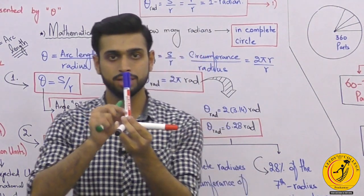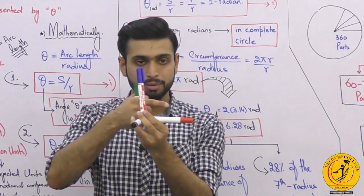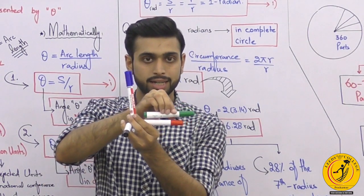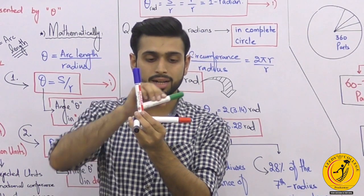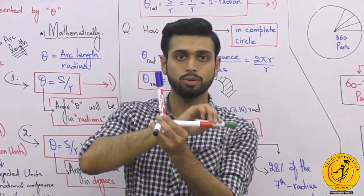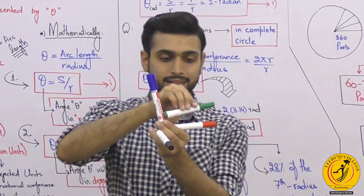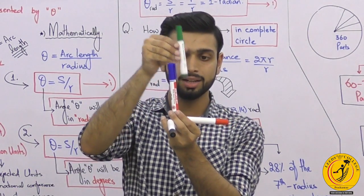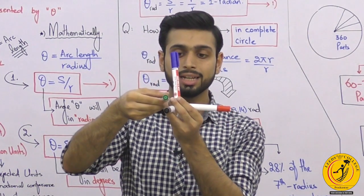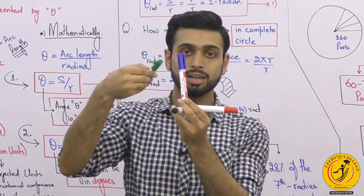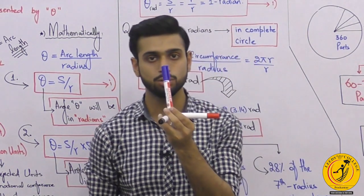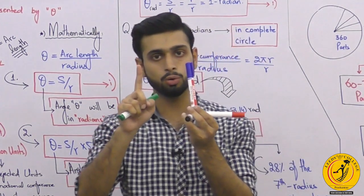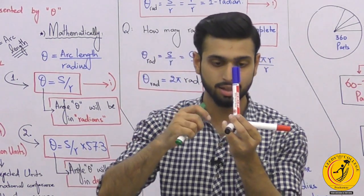Just imagine I have a body standing at the origin. If it starts motion in one dimension — let's suppose along the X-axis — then what is it covering? It is covering a line, and what does a line have? Length. Whether it covers a line along the X-axis, Y-axis, or Z-axis, what is being covered? A line, and a line has length. Meaning, in one dimension there is motion, so a line is covered, and a line has length.